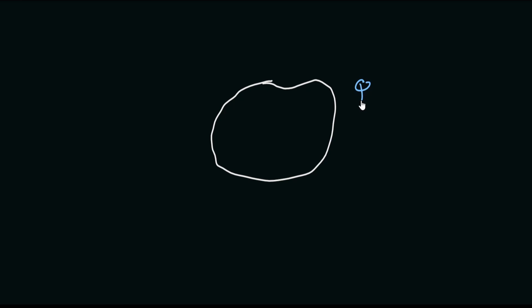Let's say that we have a conductor of some random shape. We give this conductor a charge Q. This charge will distribute itself over the surface of the conductor. How it will distribute, we do not know. But the only condition is that the electric field must be zero inside the conductor. This charge will distribute in such a way that the electric field inside the conductor will be equal to zero.